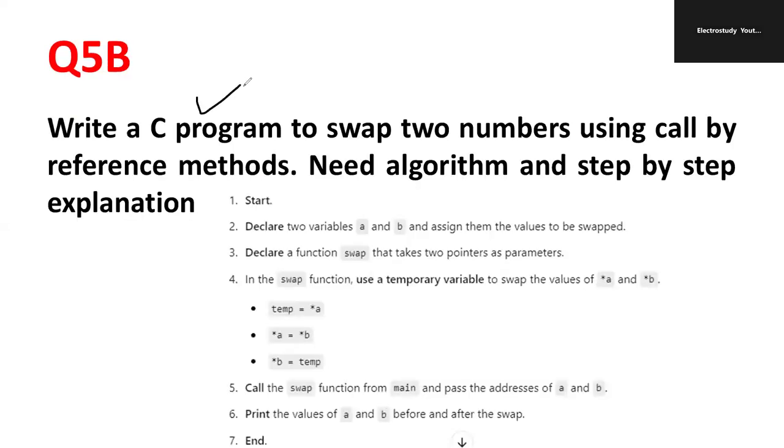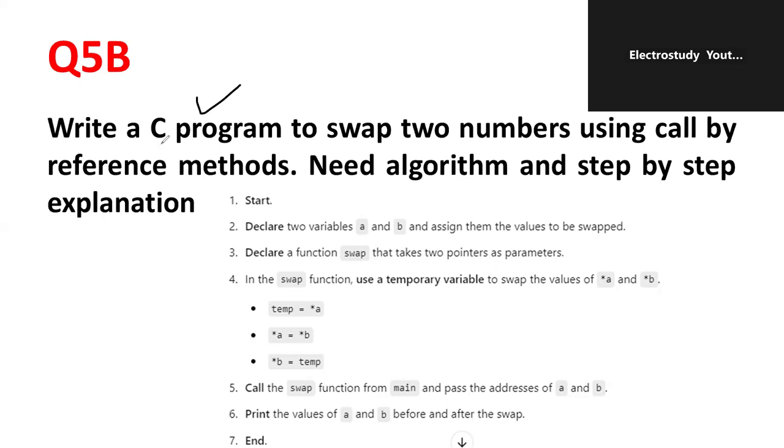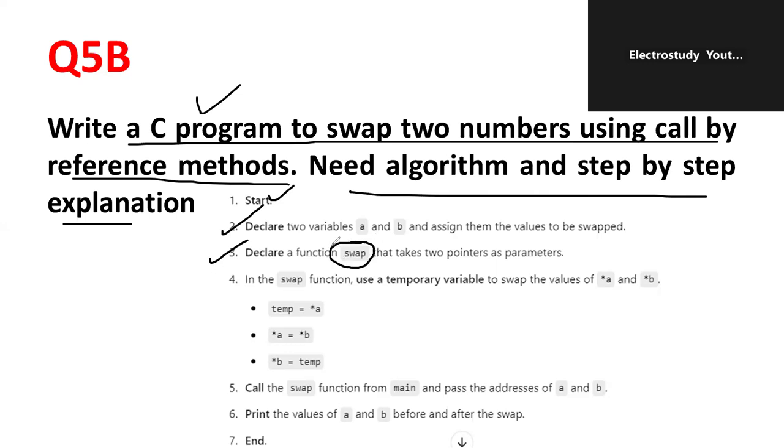There is another important program which I have found in many question papers. You can see this particular question. Write a C program to swap the two numbers using call by reference methods. Need algorithm and step-by-step explanation. First of all, you have to start the program. Declare two variables which has to be swapped. Then, declare the function swap. You are supposed to define new function called swap.